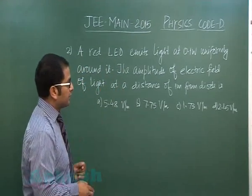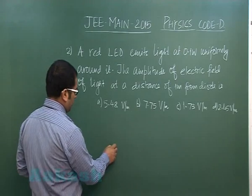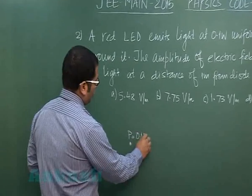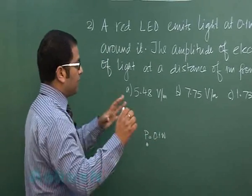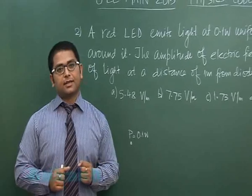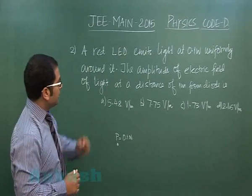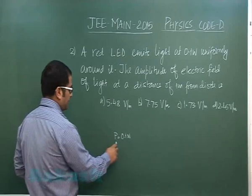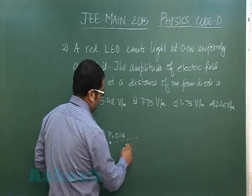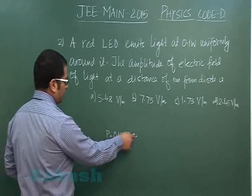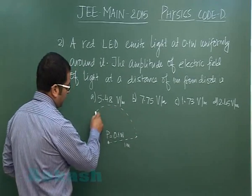So at the source the power, if I denote by P, is 0.1 watt uniformly around it. Therefore the distribution has to go in a spherical manner. The amplitude of electric field of light at a distance one meter from the diode, so at this particular point I need the amplitude of the electric field of the light.